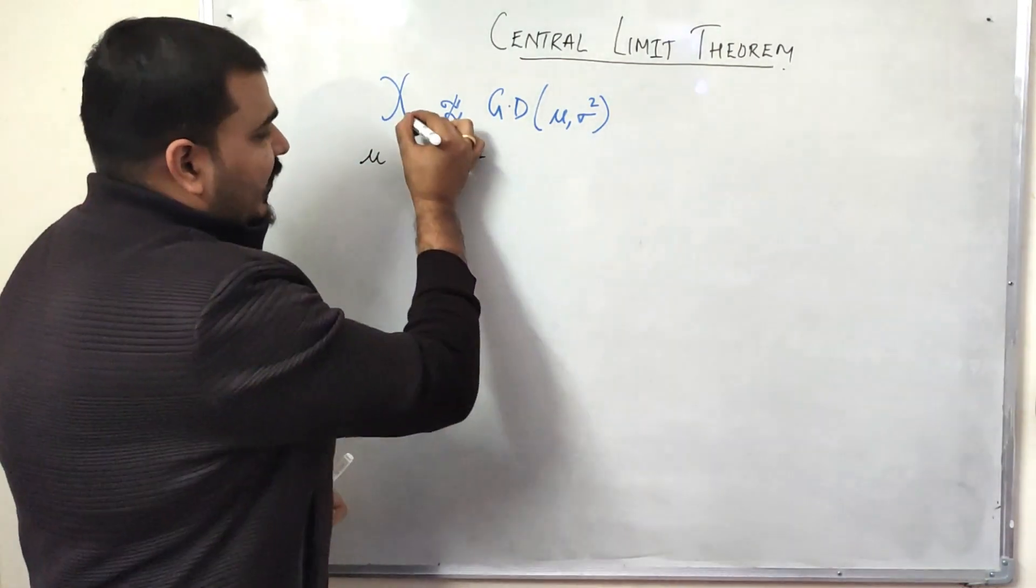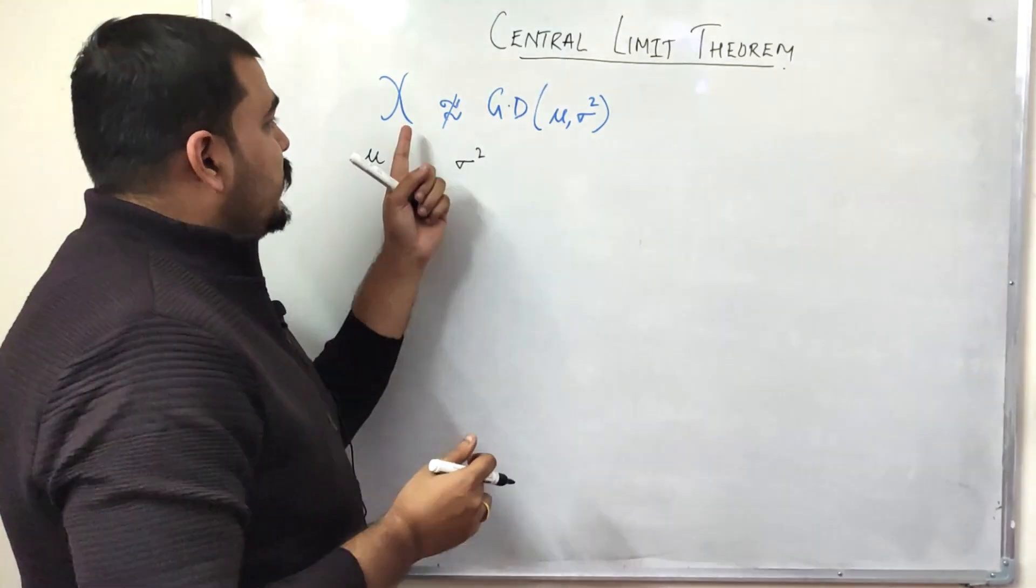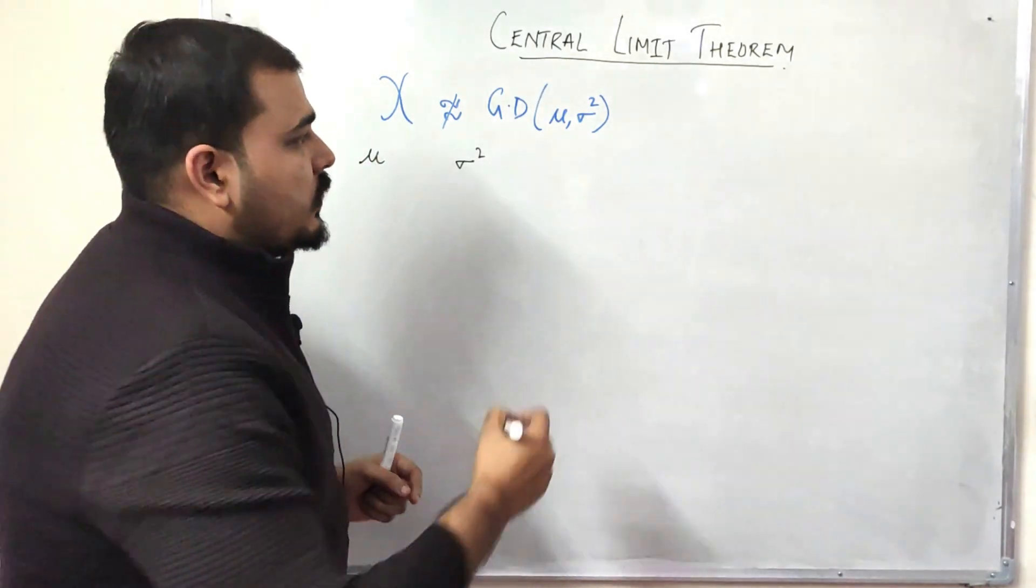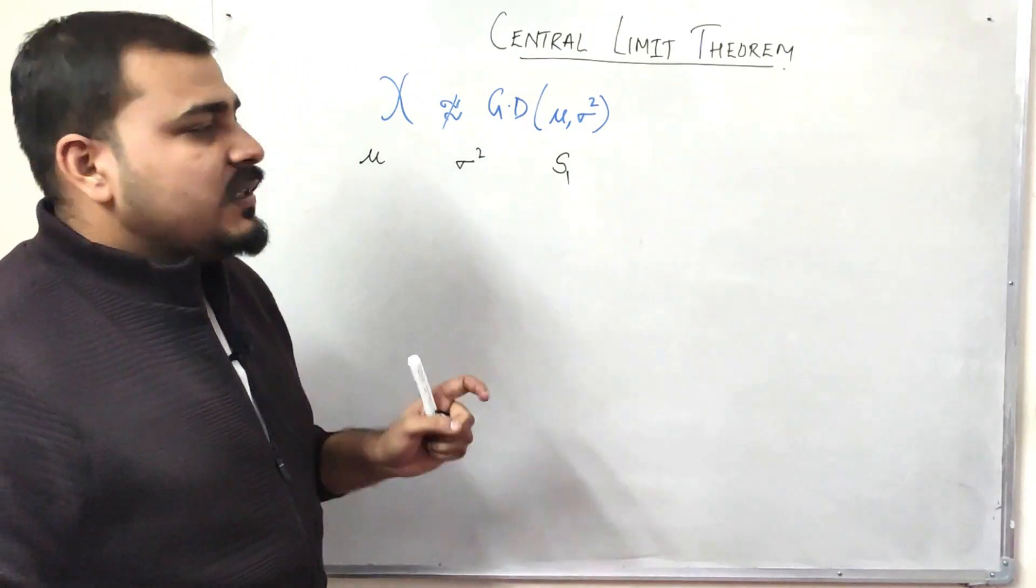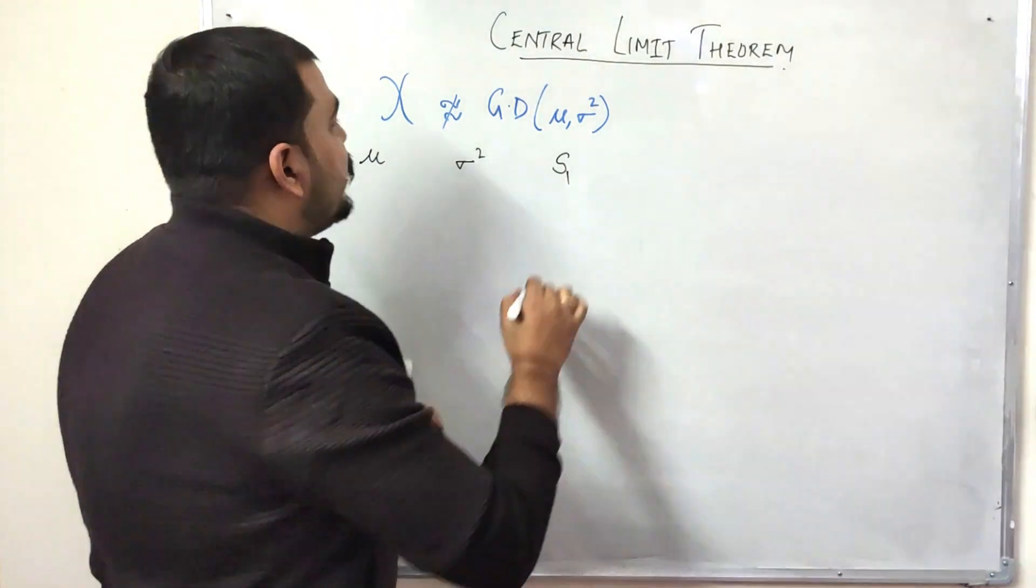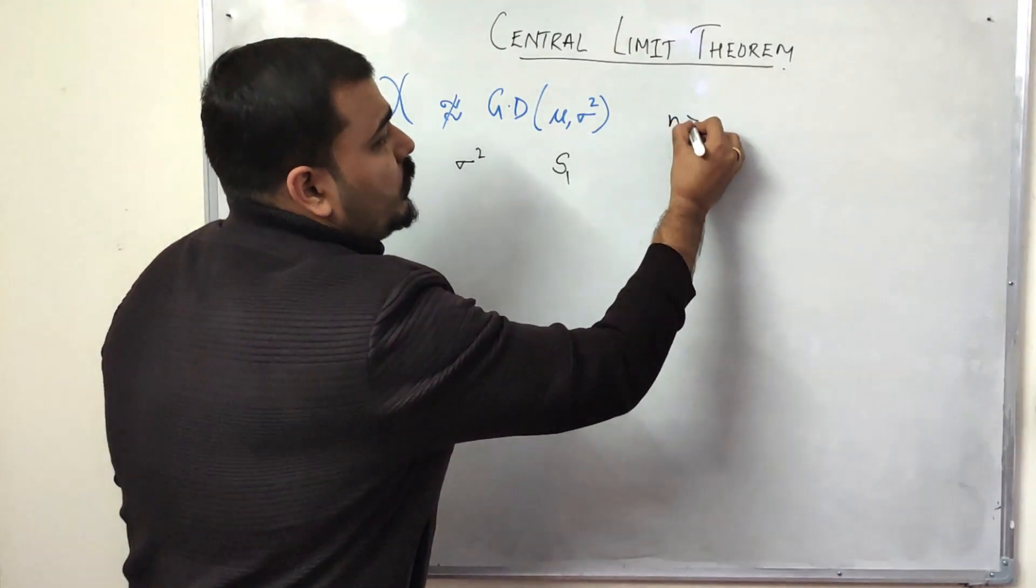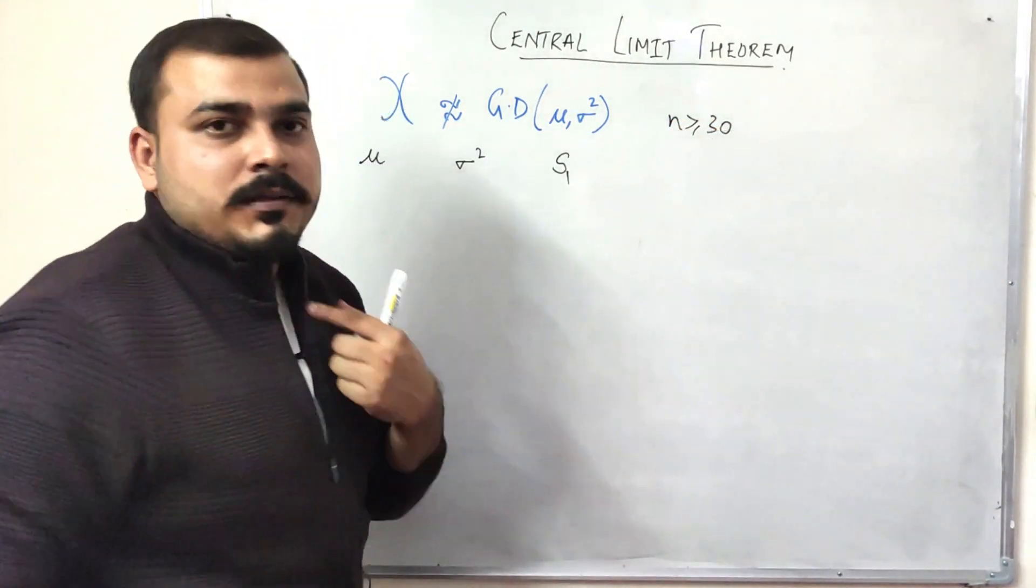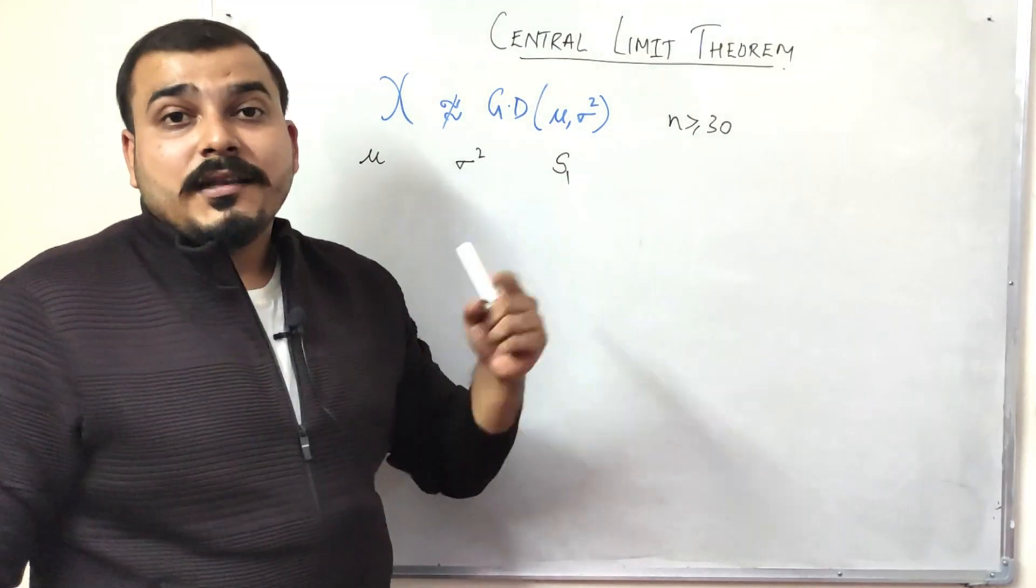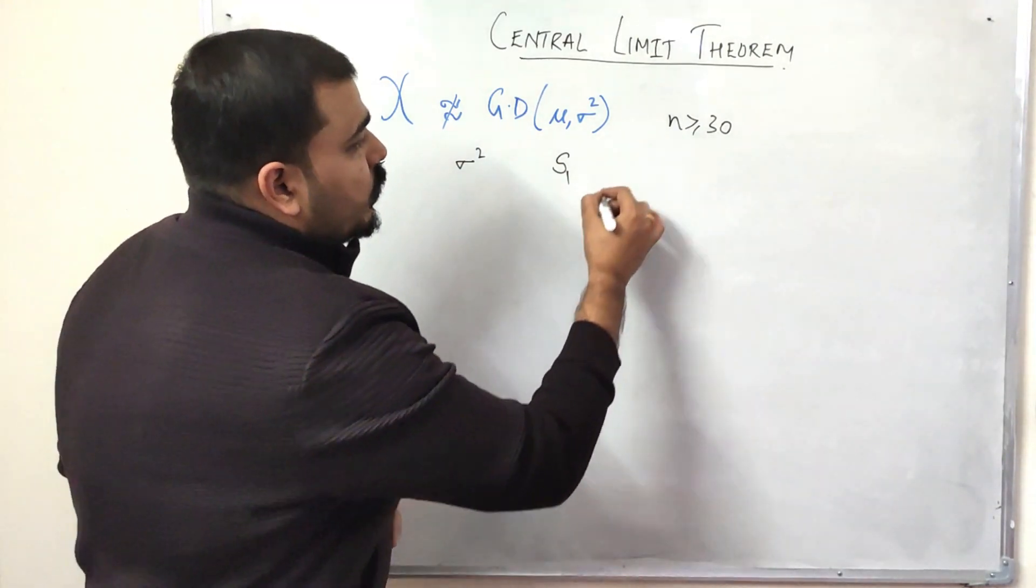Suppose I take samples from this random variable X. Suppose I'm going to take my sample S1. In this sample, let me consider that from this random variable I'm considering n is equal to or greater than 30 data points. So in my sample 1, I have considered x1, x2, like this—30 data points that I'm randomly selecting.